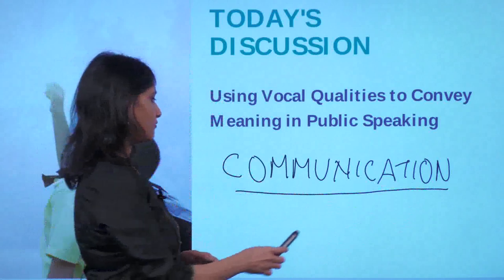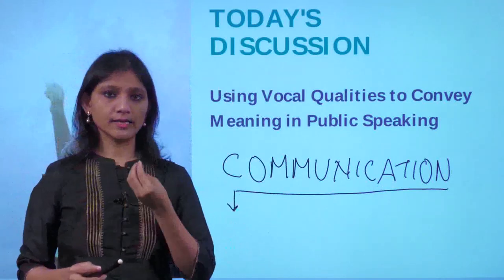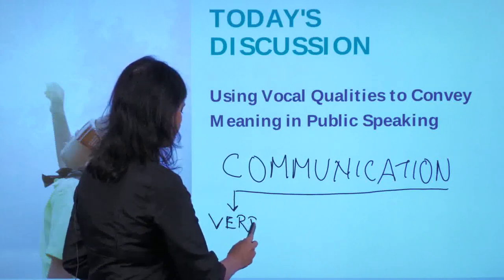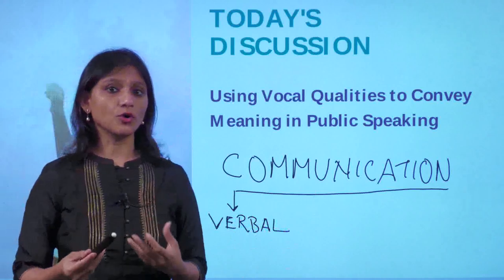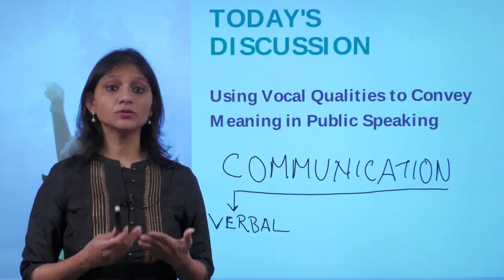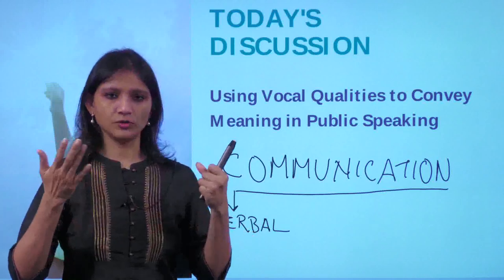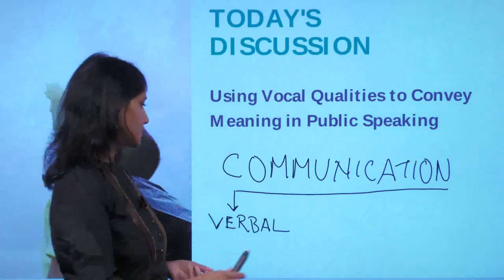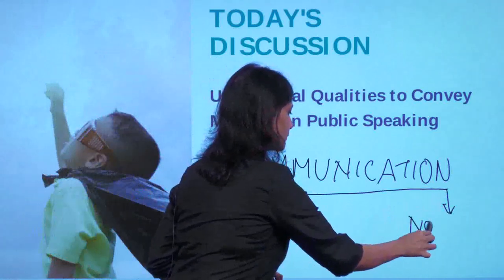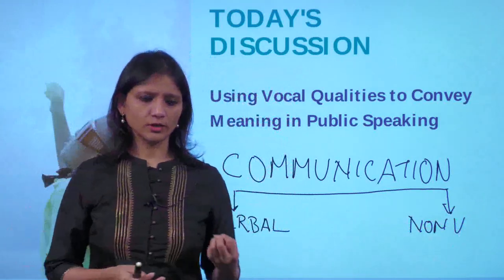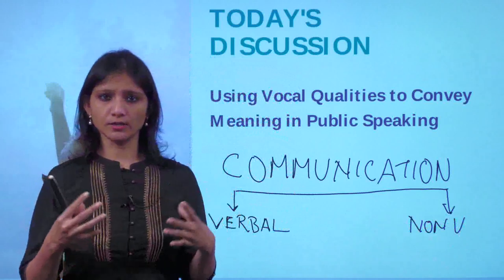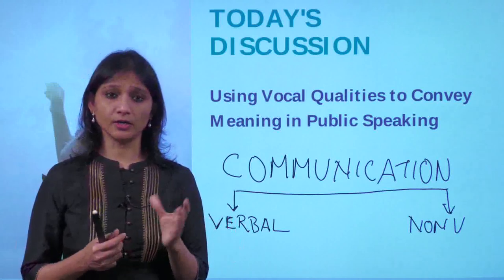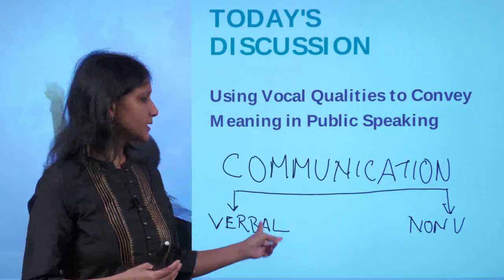Communication has two important parts we'll look at in subsequent sessions. The first is when we use words and sentences to talk — that is known as the verbal part of communication. You can also communicate using your face and body without talking — that is known as nonverbal. There are other types like written communication and art, but for public speaking we'll focus on these two.